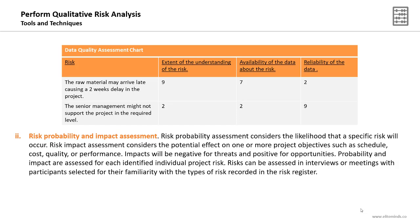Risk probability and impact assessment is another data analysis technique. In this assessment, we consider the probability of a specific risk and the impact — the potential effect, usually on one or more project objectives such as schedule, cost, quality, or performance. The key outcome of applying this technique is having the probability and impact of each identified project risk. Risks' impacts will be negative for threats — for example, a delay on the schedule — and positive for opportunities, such as a saving in the budget. Probability and impact are assessed for each identified individual project risk.